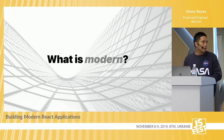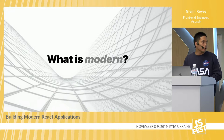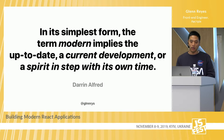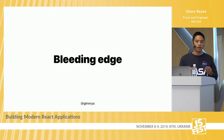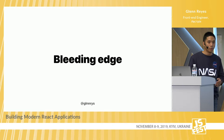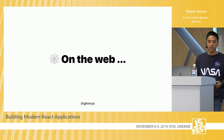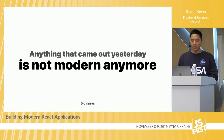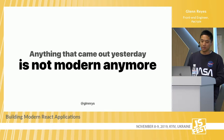Let's take a step back and ask what 'modern' actually means. Darien Alfred defines it as: in its simplest form, the term modern implies the up-to-date, a current development, or a spirit within its own time. In tech, it's known as the bleeding edge or cutting edge — all the exciting stuff that we want to use, but probably shouldn't. In the web, we see new libraries every day, and anything from yesterday is generally outdated today — we could call it legacy code already.